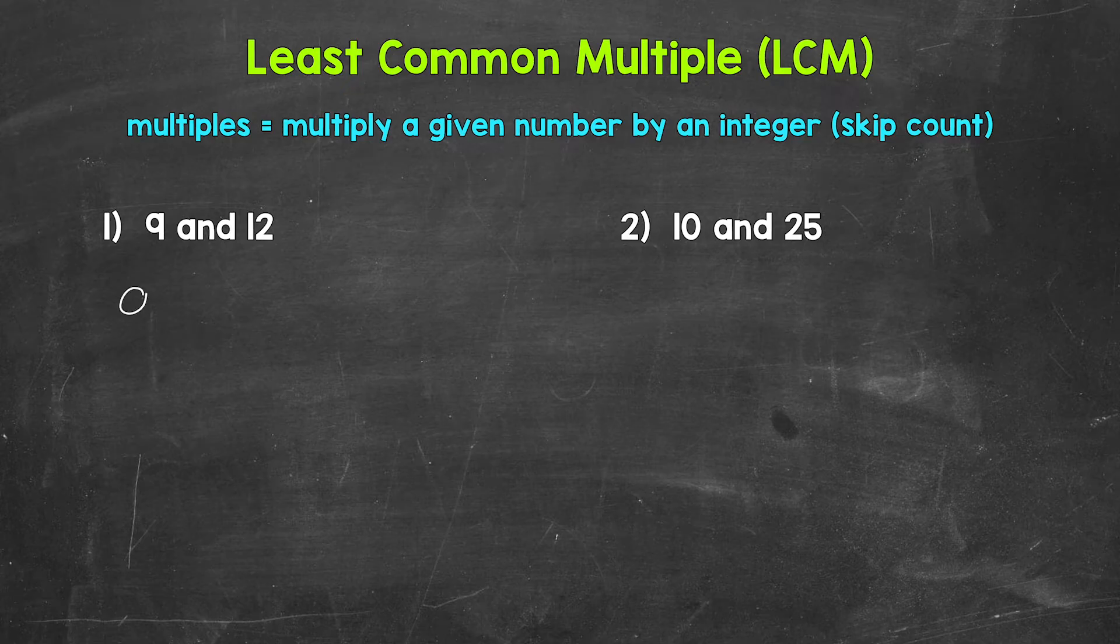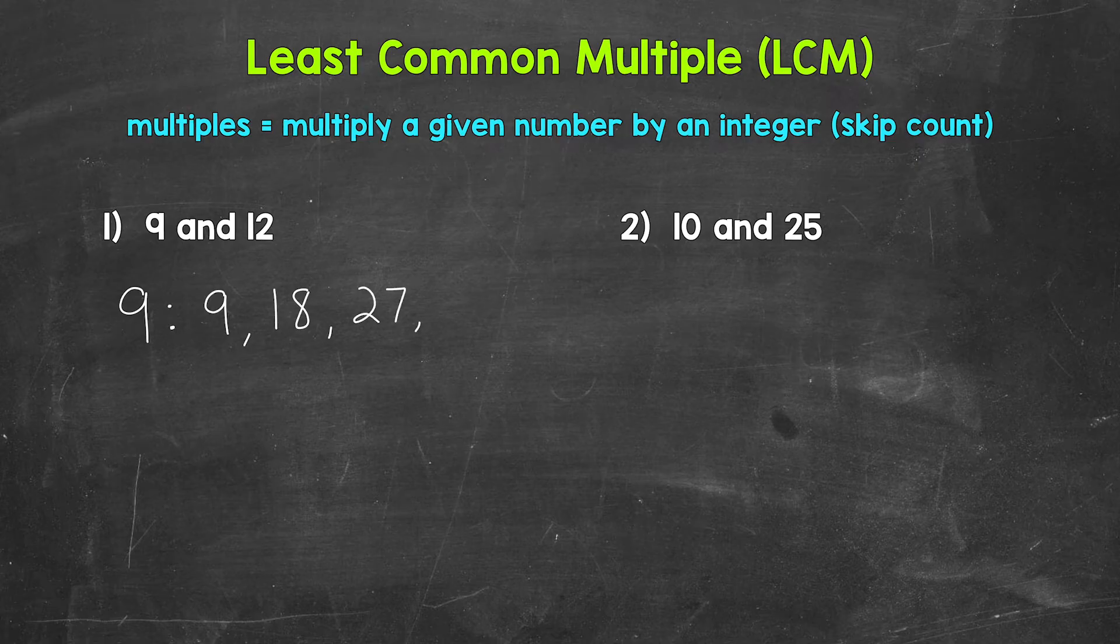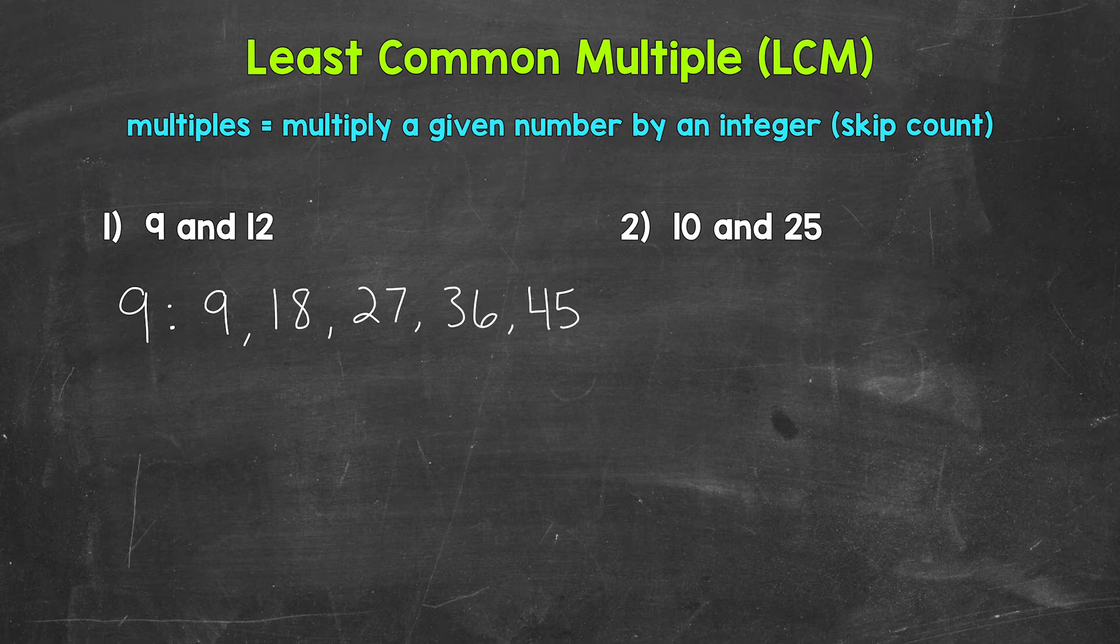Let's start with some multiples of 9, which are 9 times 1, which is 9, 9 times 2 is 18, 9 times 3 is 27, 9 times 4 is 36, and 9 times 5 is 45. So you can see that we just skip counted by 9 to list those multiples.